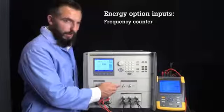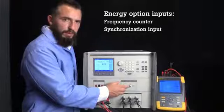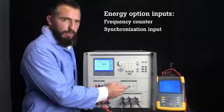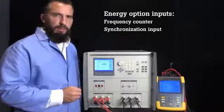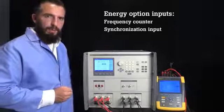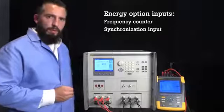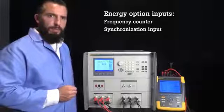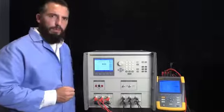There is also a synchronization input that allows the 6003A's outputs and dips and swells to be synchronized with an external signal. This input can also be used to synchronize other power or energy standards like the Fluke Calibration 6105A to create a four-phase system.